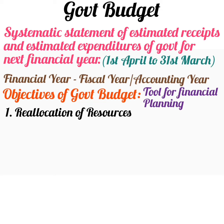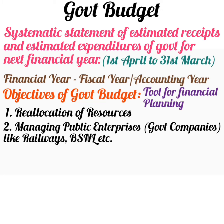Private sectors always use their resources for maximization of profit and ignore the welfare needs of the society. Through budget, the government plans to charge tax on profits earned by the private sector. Government then uses these taxes for the common interest of the society — for example, building parks, roads, etc. Managing public enterprises: proper management of government companies requires proper planning.